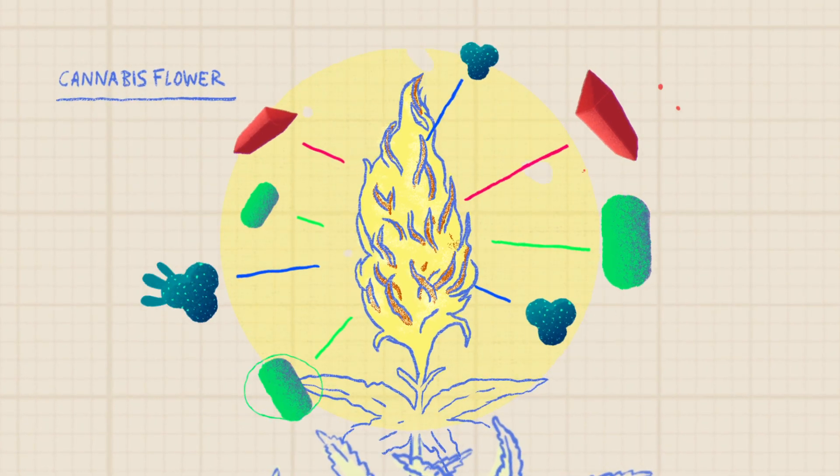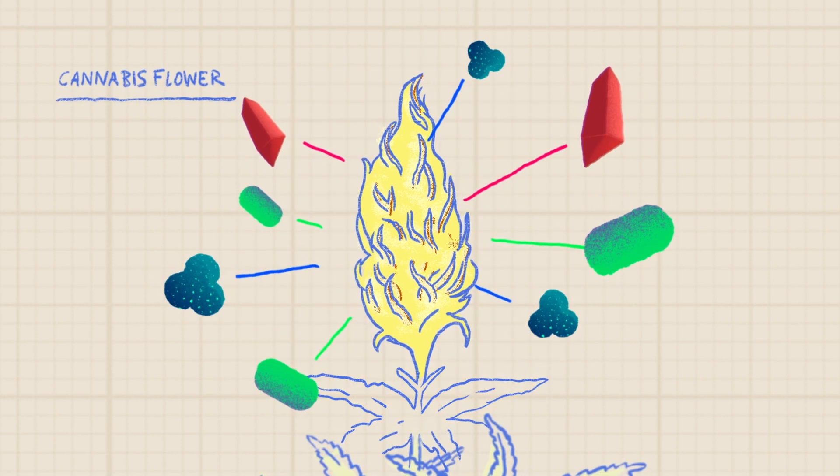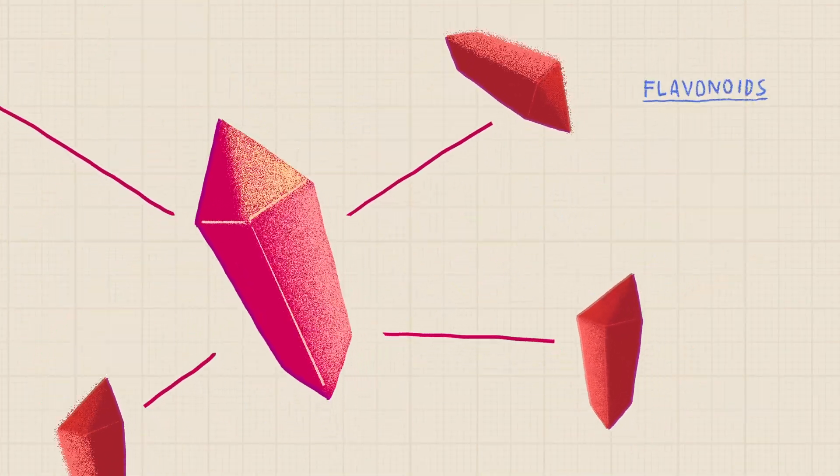Cannabis flowers produce innumerable chemical compounds. The three most important components that cause effects on the body are cannabinoids, terpenes, and flavonoids.